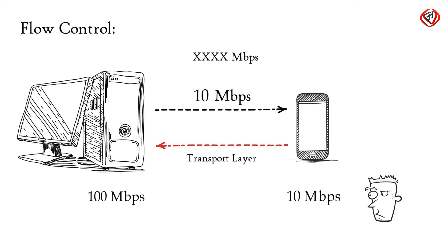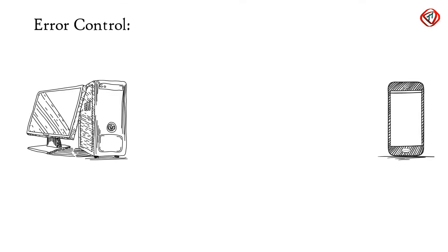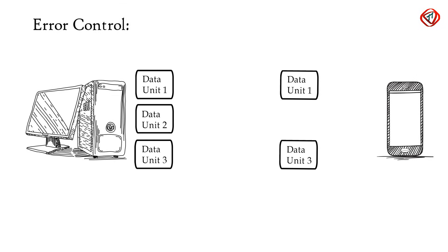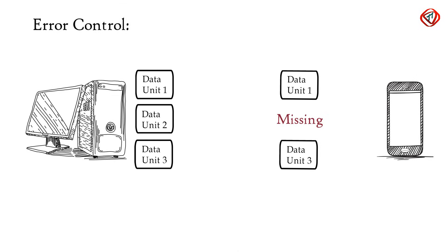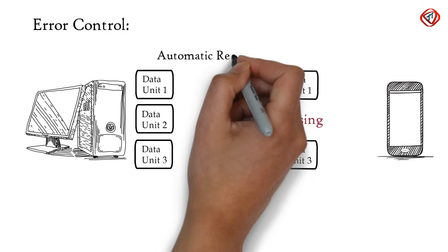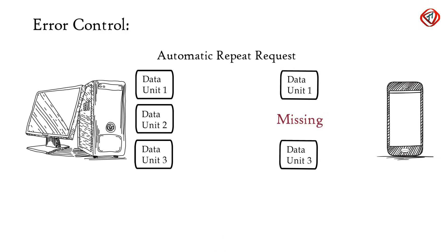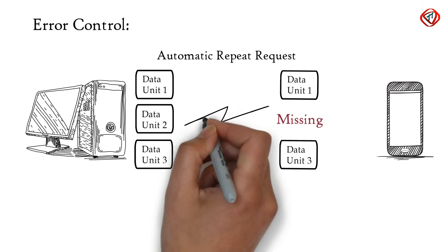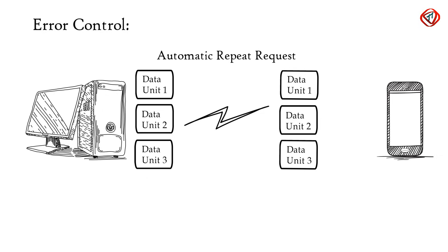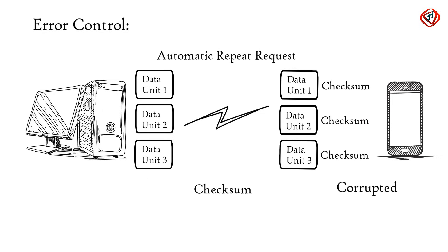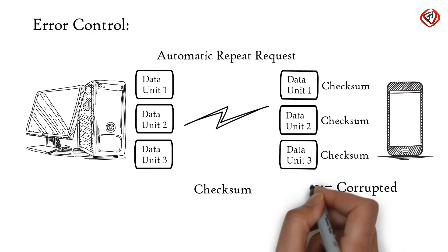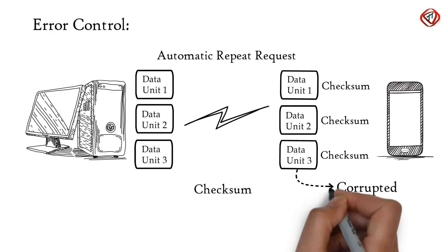The transport layer also helps in error control. If some data does not arrive at the destination, the transport layer uses automatic repeat request schemes to retransmit the lost or corrupted data. A group of bits called a checksum is added to each segment by the transport layer to find out a received corrupted segment.